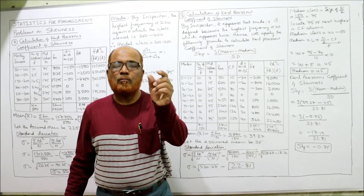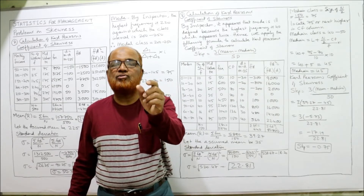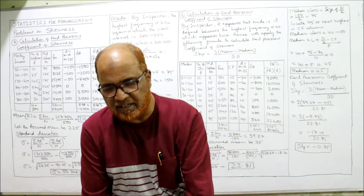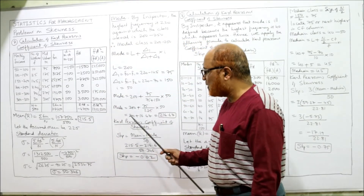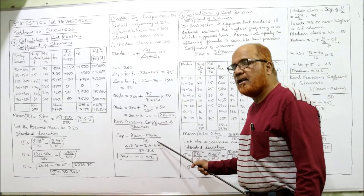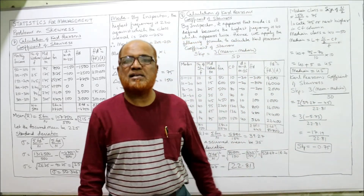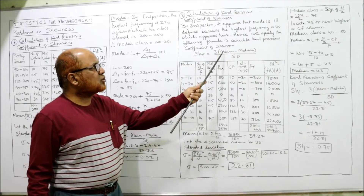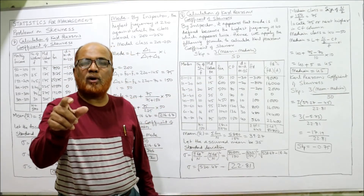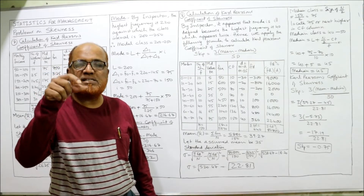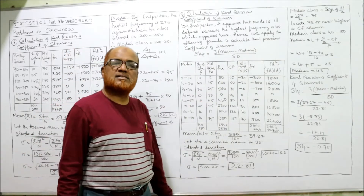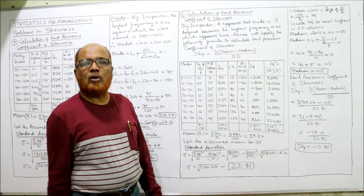Because the mode is ill-defined in a bimodal series, Carl Pearson has given an alternative formula: SKP = 3 × (Mean − Median) / Standard Deviation. The original formula is (Mean − Mode) / σ, but if mode cannot be calculated, the alternative is used. So here we do not require mode; we require median.